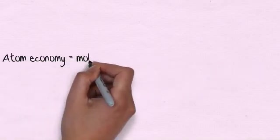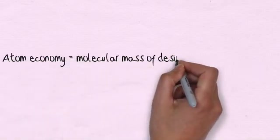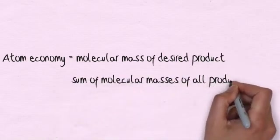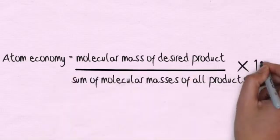The atom economy is the molecular mass of the desired product divided by the sum of the molecular masses of all the products times 100.